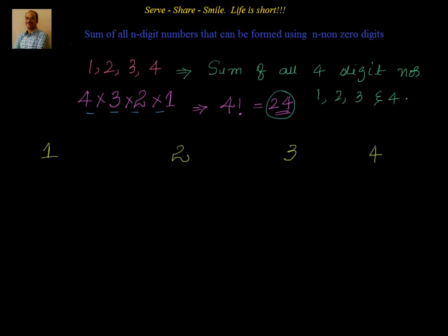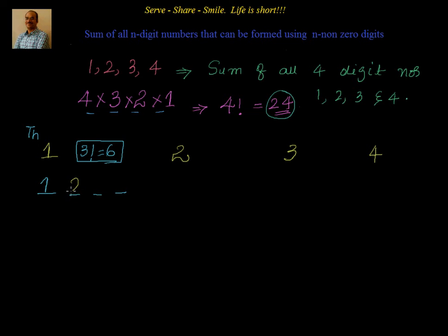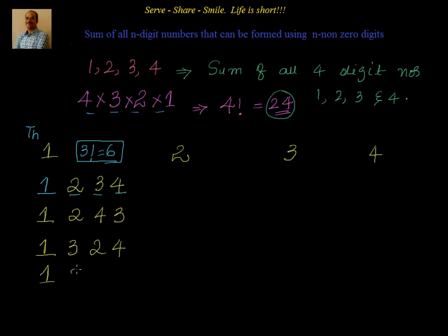Let me start with 1. The positions are units, tens, hundreds, thousands. If the thousands position is fixed with 1, I have 3 slots to be filled with 3 remaining numbers — that's factorial 3 or 6. So we can form 6 numbers starting with 1: 1234, 1243, 1324, 1342, 1423, and 1432.